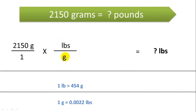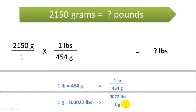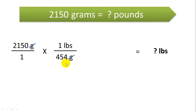We want pounds on top and grams on the bottom. Using the first option, that's 1 pound per 454 grams. We plug in those numbers: the grams cancel each other out, and we simplify to 2,150 pounds over 454. We do that division and come up with 4.7 pounds.